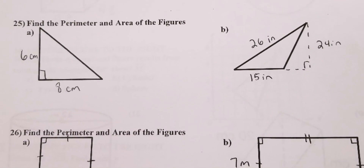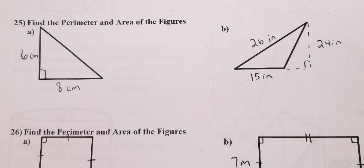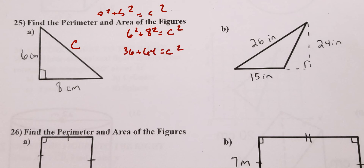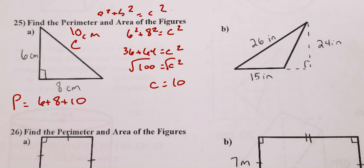Number 25: find the perimeter and area of the figures — these are triangles. To find the missing side, use a² + b² = c²: 6² + 8² = c², so 36 + 64 = c², meaning 100 = c², so c = 10 centimeters. Now the perimeter: 6 + 8 + 10 = 24 centimeters. Make sure you label it as P = 24 cm.